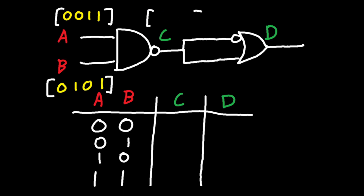And this is the same for C. C can be represented by brackets as well. 0,0 — the first pair of inputs put into a NAND gate — gives you 1. For 0,1 in a NAND gate, you again get 1. For 1,0, you again get 1. And 1,1 in the NAND gate gives you 0. So C's bracket is 1,1,1,0.